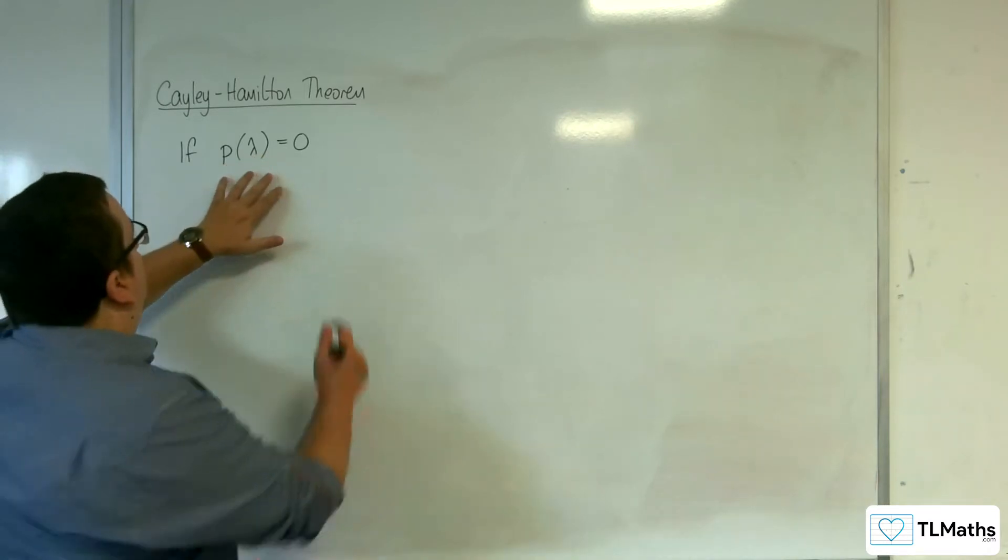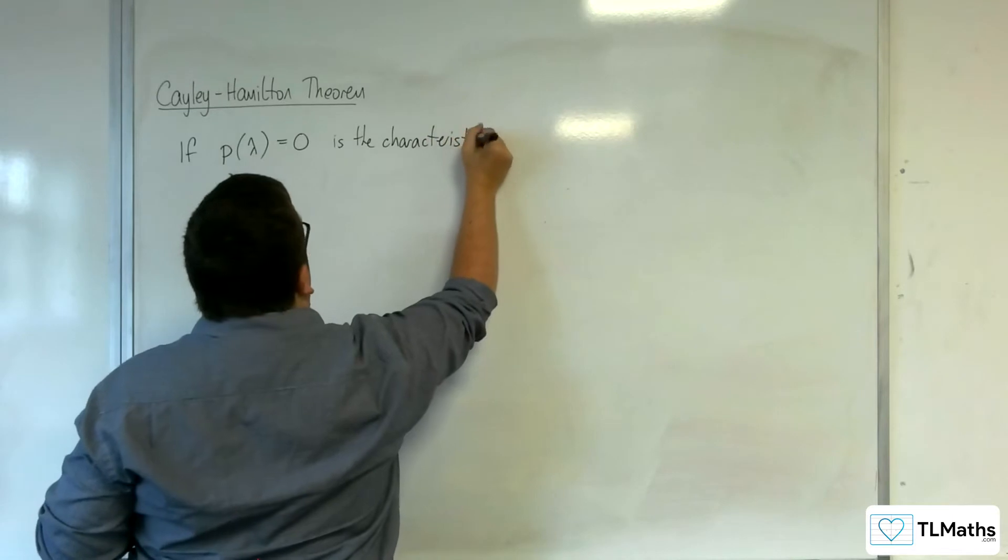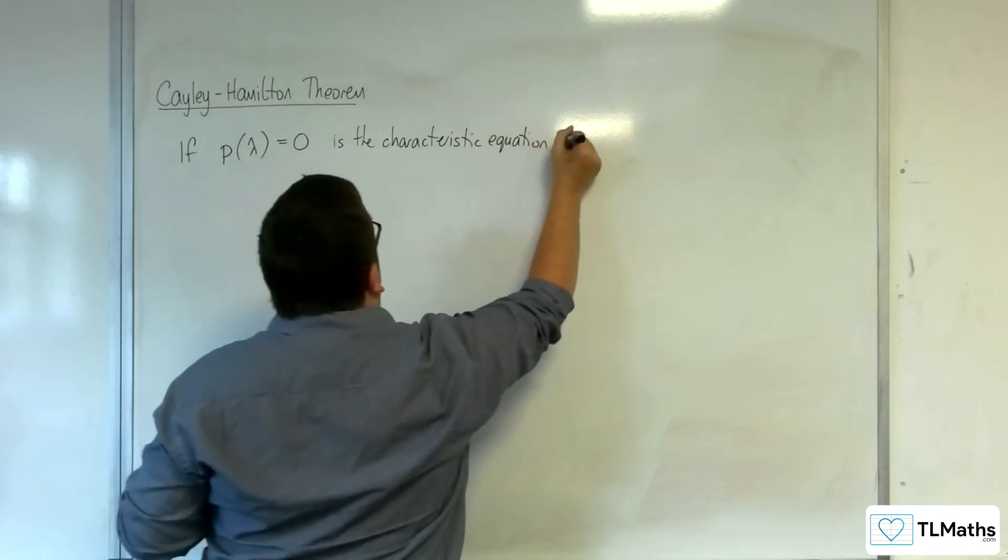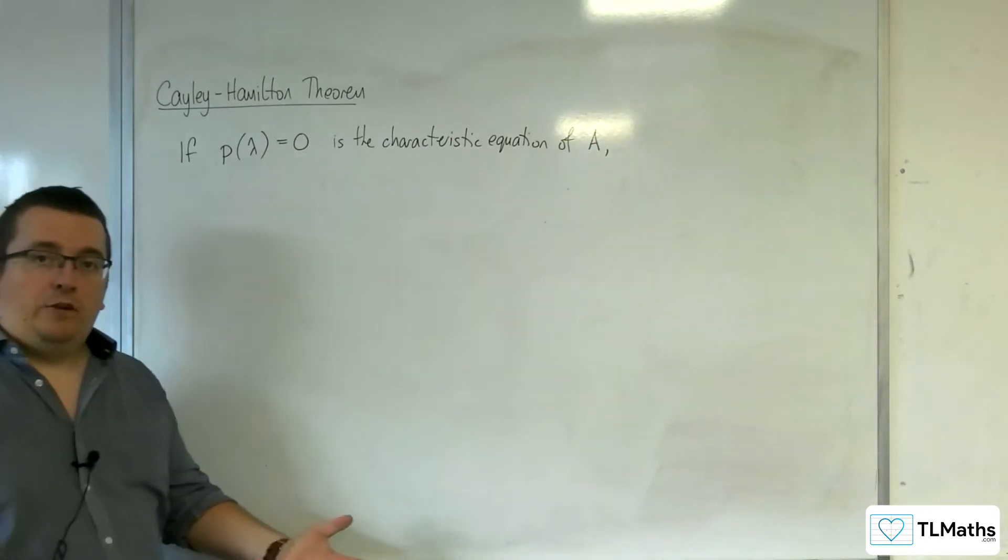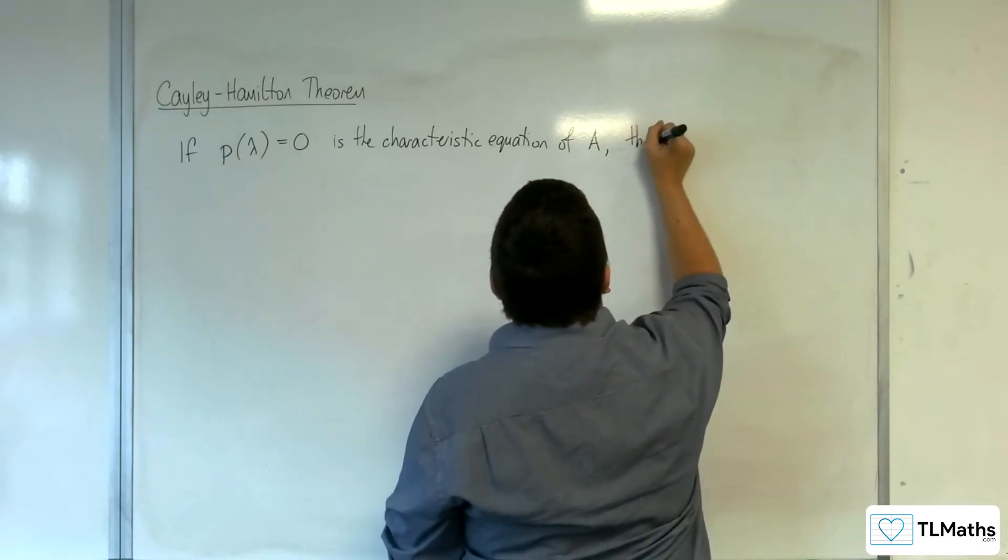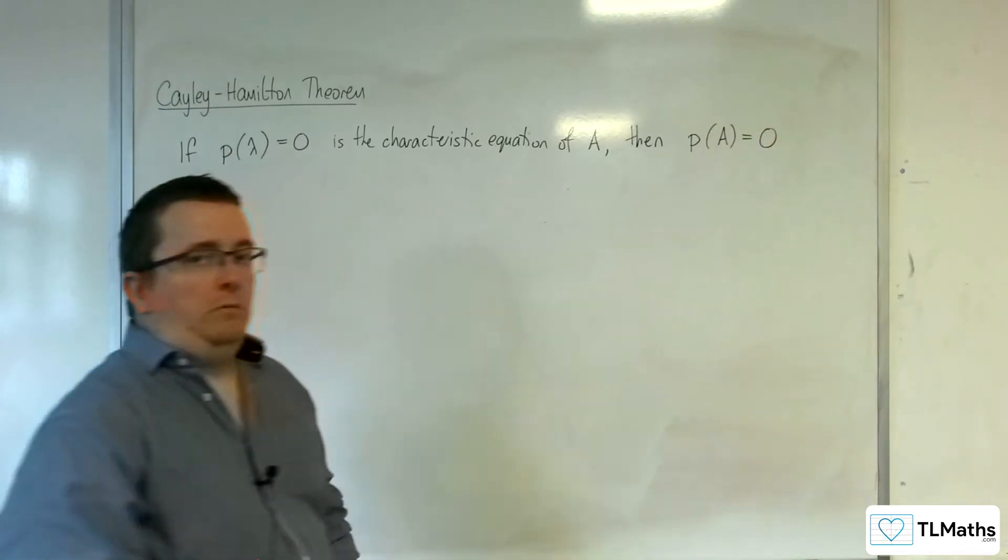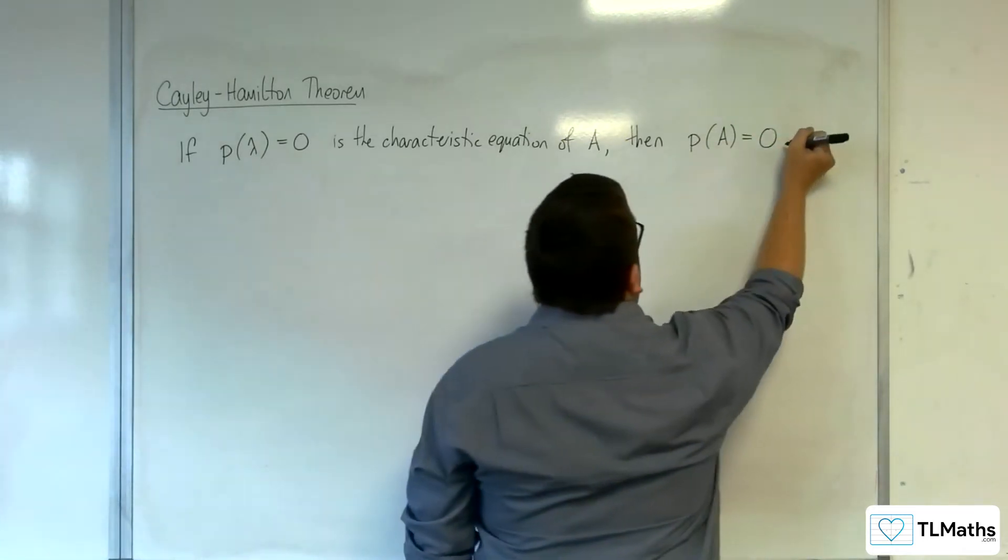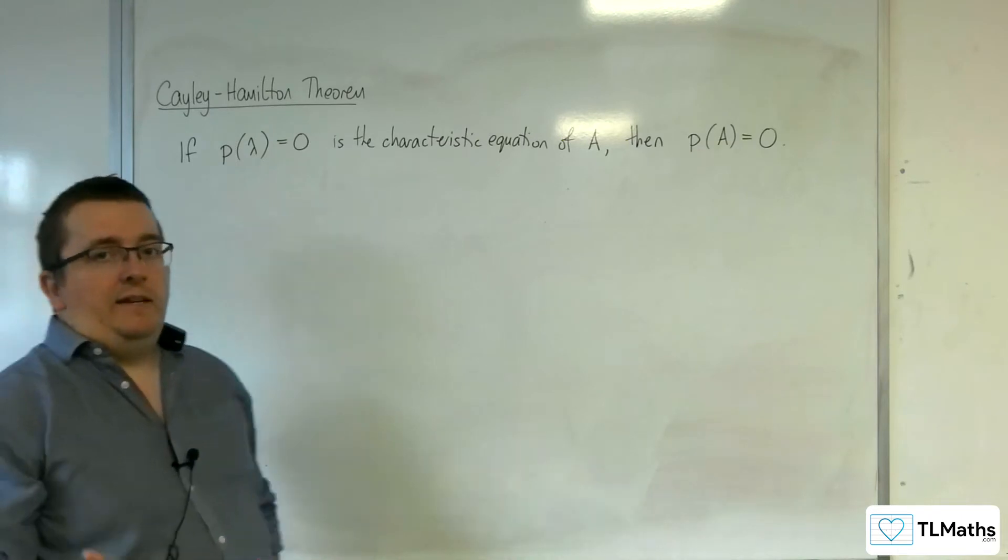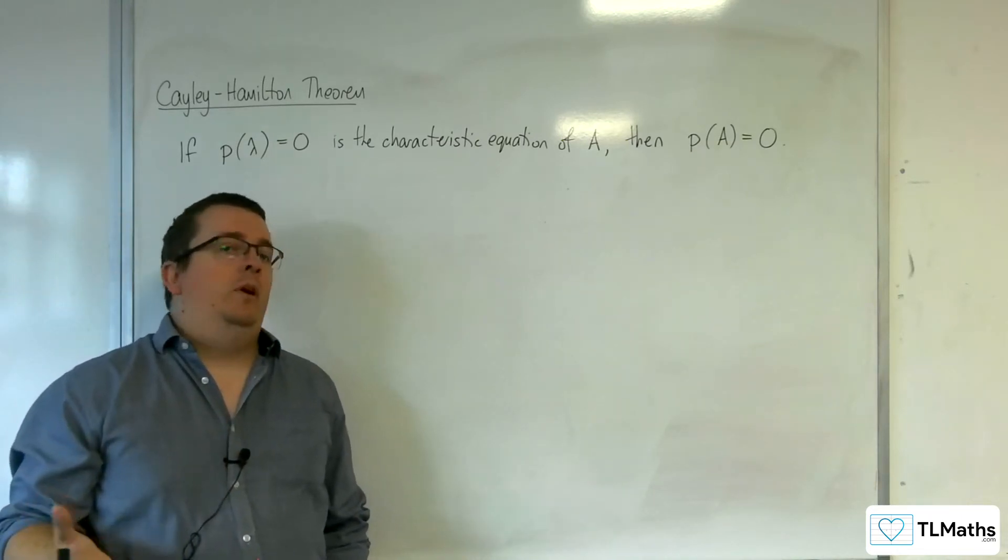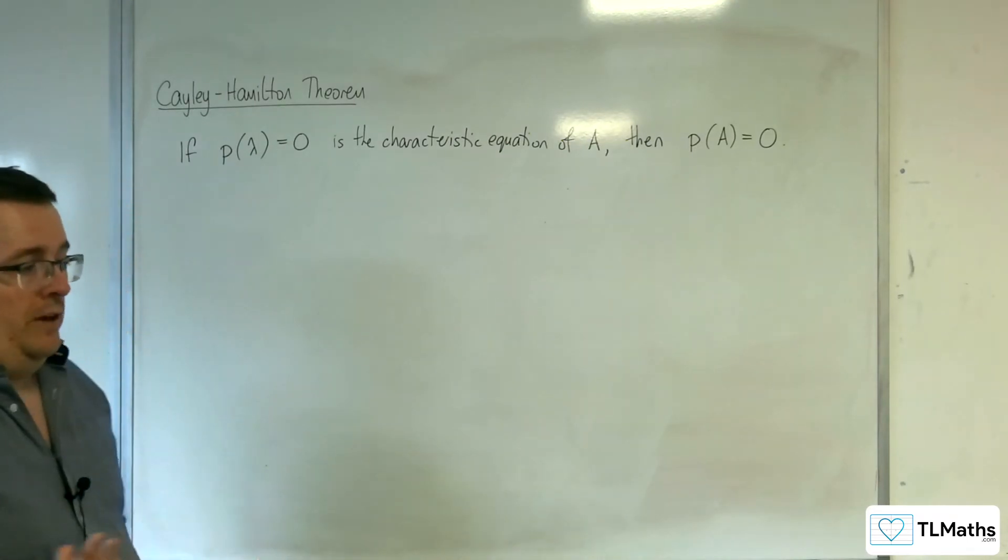Okay, so if that is the characteristic equation of our matrix A, our square matrix A, then P of A is also equal to 0. Now, what does that mean in practice? Well, first of all, we're going to need a matrix A. So I'm going to do this via an example. I'm not going to be proving the Cayley-Hamilton Theorem. So that's certainly beyond the scope of the course.